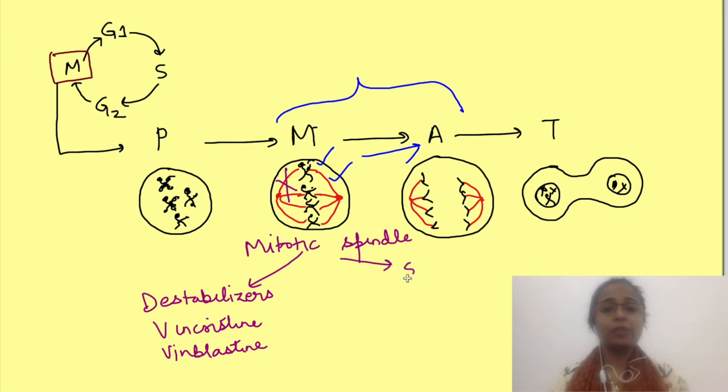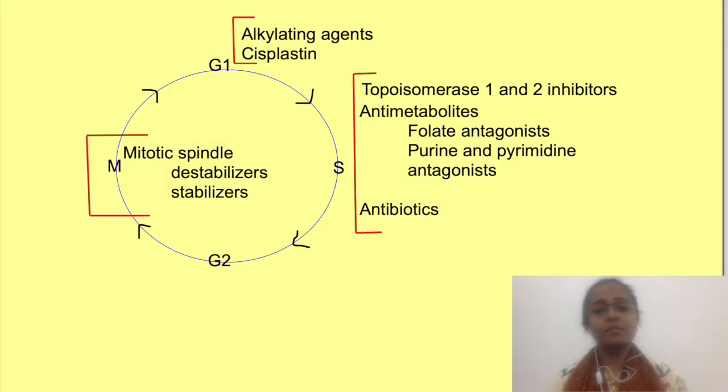And second one are mitotic spindle stabilizers. That means they will not allow it to separate. So these are taxanes. They prevent the disassembly of the microtubules. That's the physiological basis of action of antineoplastic drugs.